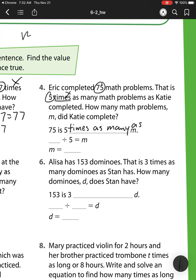75 is 5 times as many as m. So what that means is we have this mystery number m, and that 5 times as many means that there would be 5 boxes. And altogether, those 5 boxes of that mystery number would equal 75. So I need to do the inverse. So that means I'm going to do the opposite. So I have 75 divided by 5 equals m.